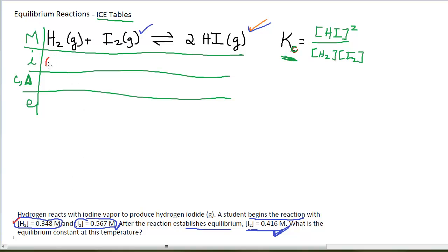Here are the values that I put in the table. At the beginning of the reaction, H2 is 0.348. That's the initial concentration of H2. The initial I2 is 0.567. And the initial HI is zero because I don't begin with any in it. At equilibrium, my I2 concentration is 0.416. That numerical value goes down here.